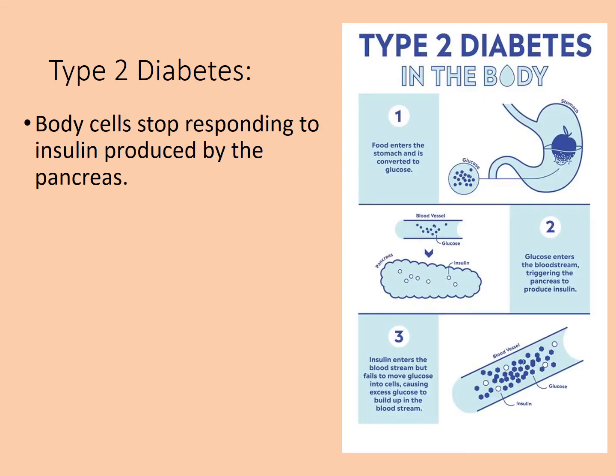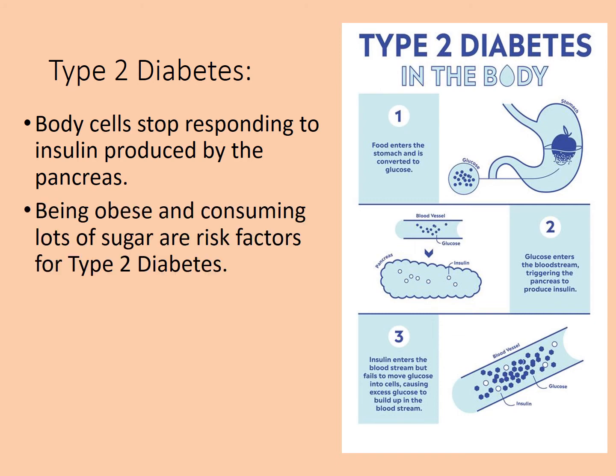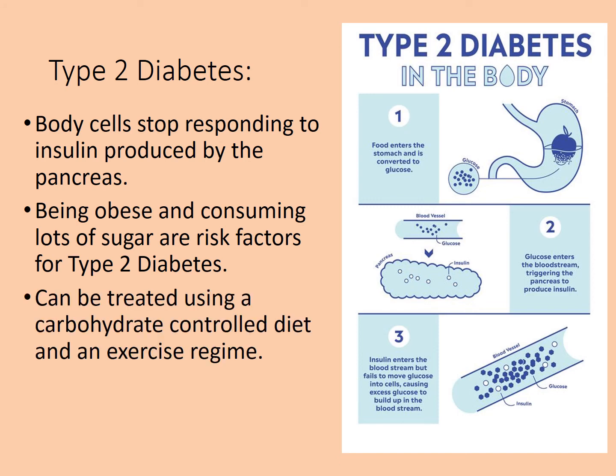Type 2 diabetes is not inherent or genetic — it develops as a result of diet. The pancreas produces the correct amount of insulin, but body cells stop responding to it. The big risk factor is obesity and a diet containing a high amount of sugary foods. Essentially, because insulin is present all the time, cells start ignoring it.